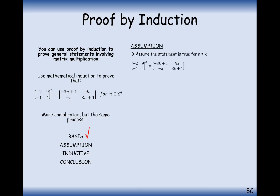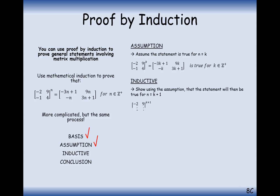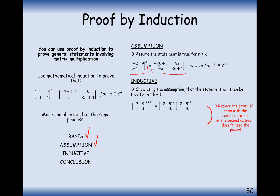Now let's assume that our theorem is true for n=k. So we're assuming that the matrix (−2, 9; −1, 4) to the power of k can be simplified to (−3k+1, 9k; −k, 3k+1). The next step is the inductive step, and now we want our matrix to the power of k+1.